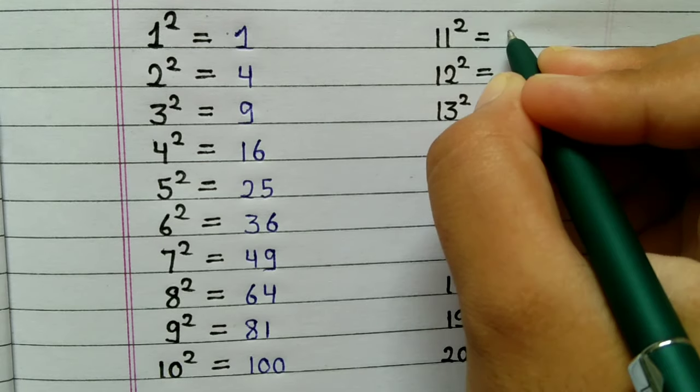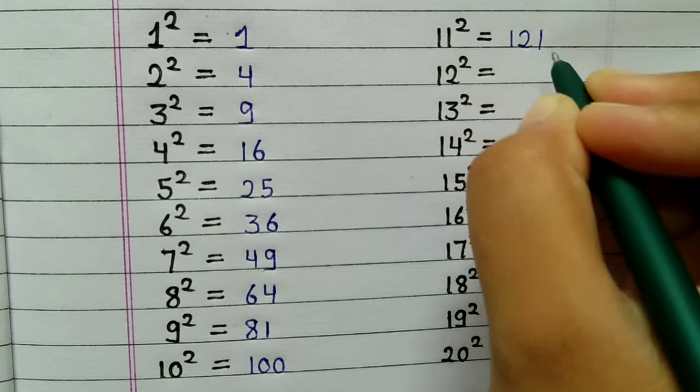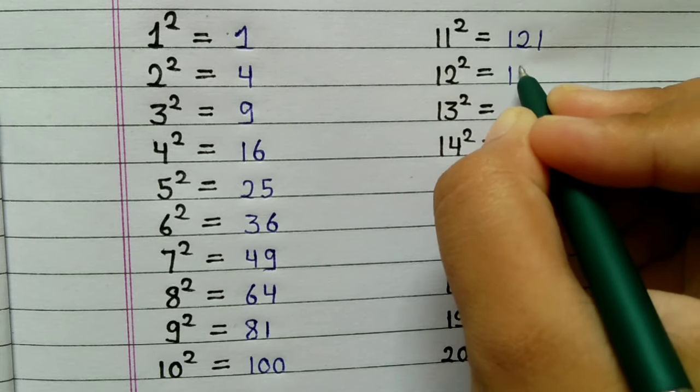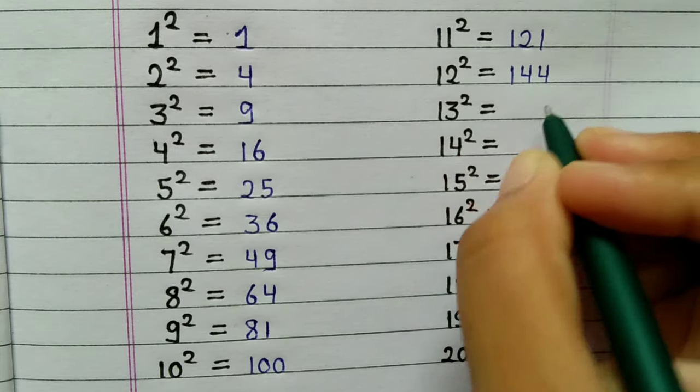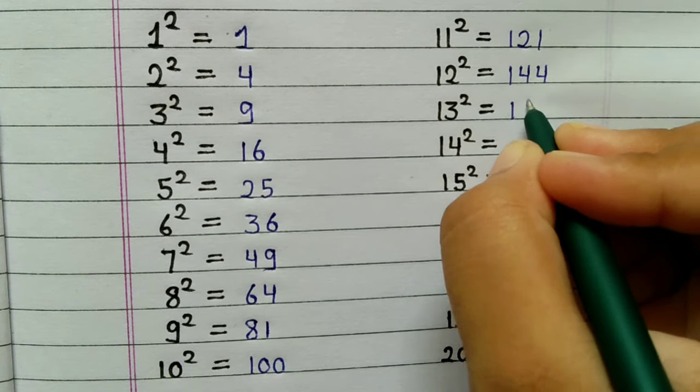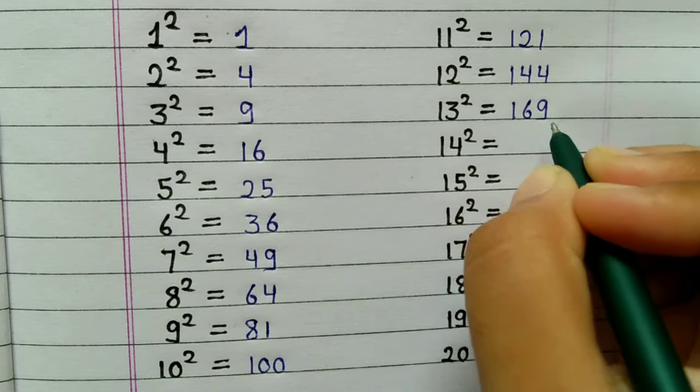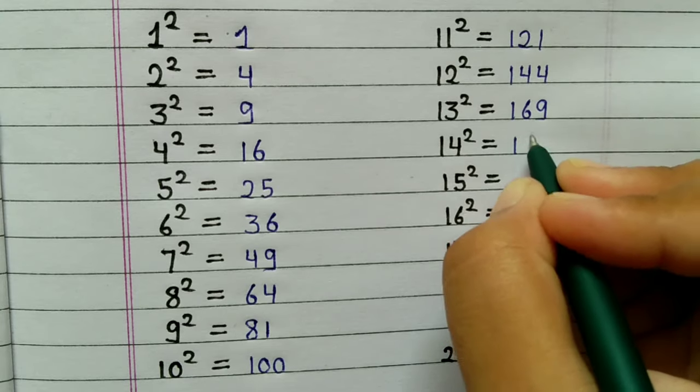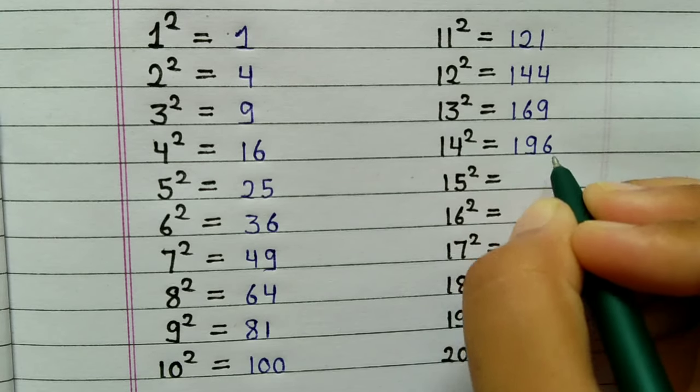11 squared is 121, 12 squared is 144, 13 squared is 169, 14 squared is 196.